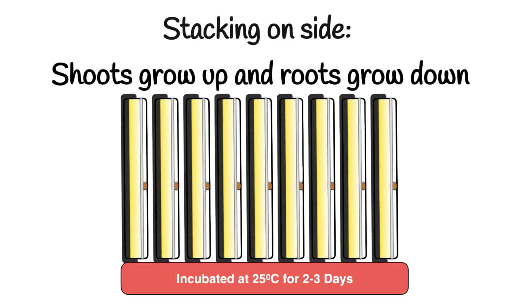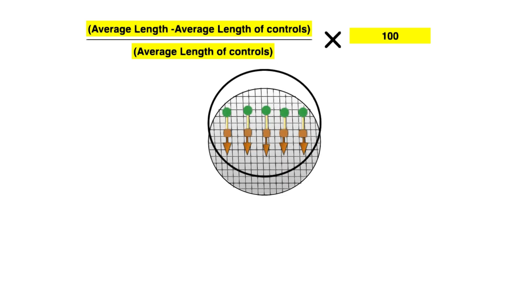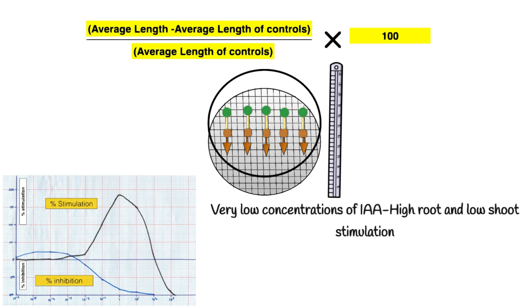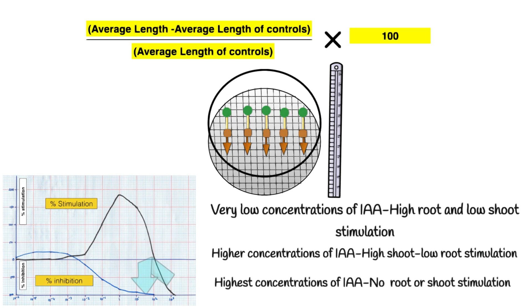Stacking on its side will make it easier to measure. Place in the incubator for two to three days — 25 degrees Celsius has worked well. Remove from the incubator and find out how much the average growth has been for the roots and the shoots in each plate. Use those average results to get the percentage stimulation in comparison to the controls using that formula — very important — you're comparing against the control, the distilled water. Plot your results and you should get a graph: at very low concentrations of IAA there is high root and low shoot stimulation; at higher concentrations it's the opposite — high shoot stimulation but low root stimulation; and at the highest concentrations of IAA there is no root or shoot stimulation — it's inhibited. That's one practical worth revising in detail.